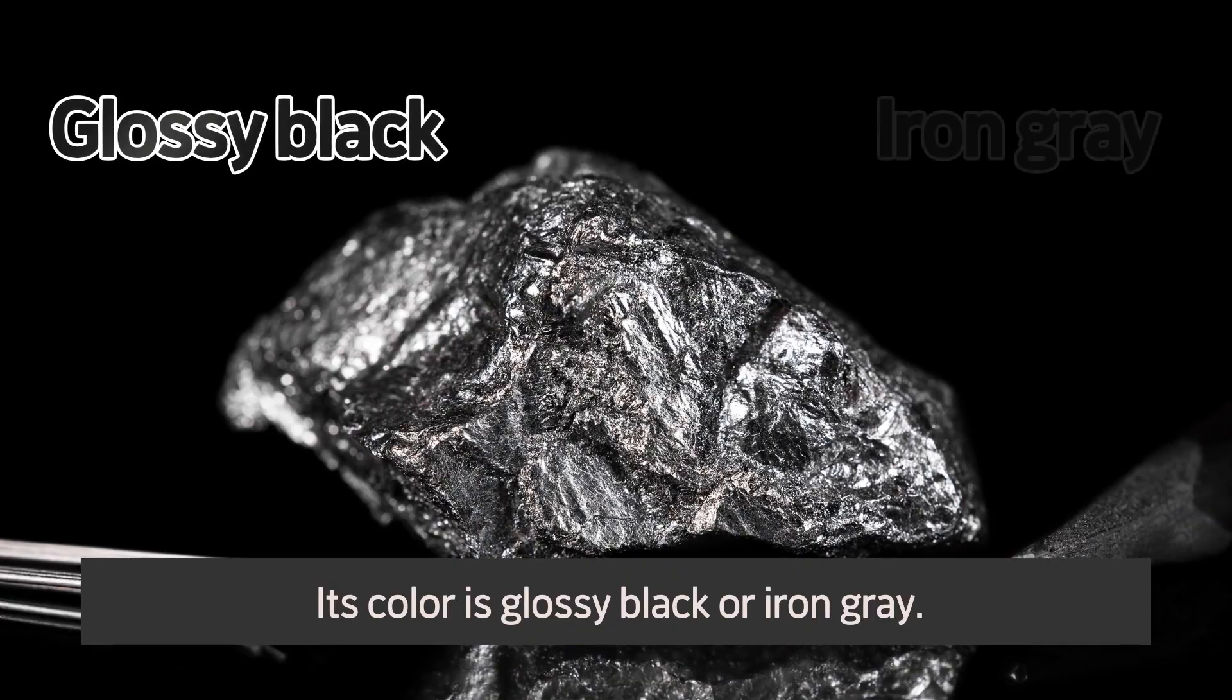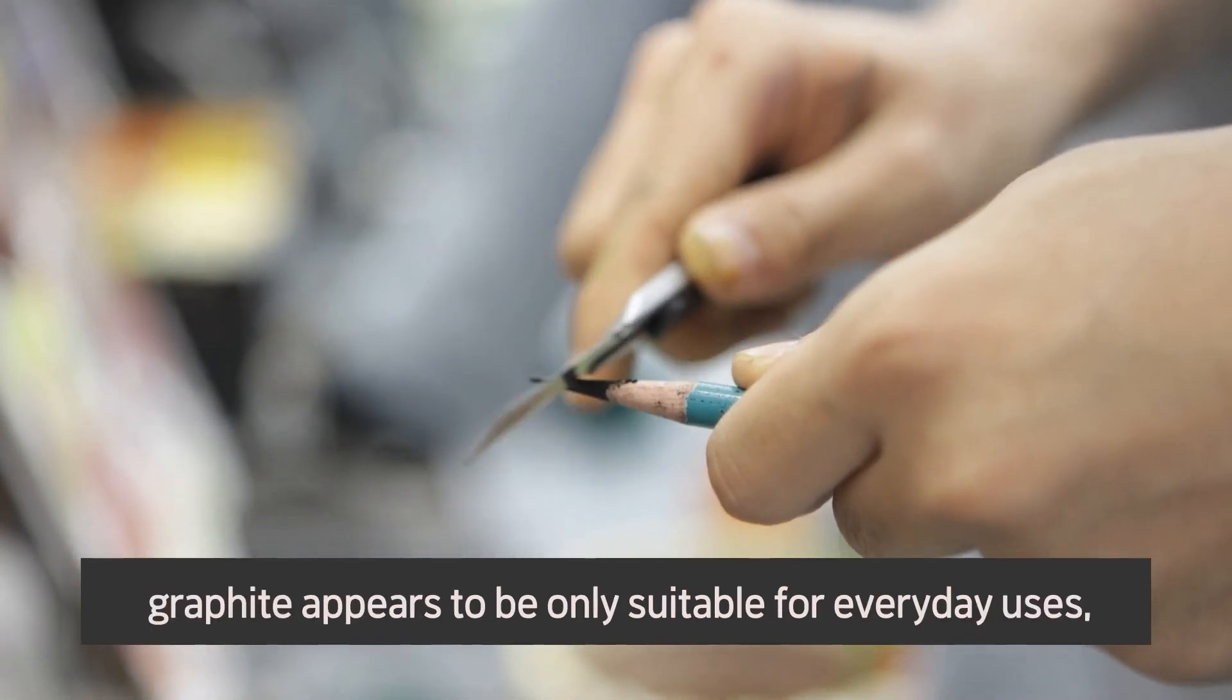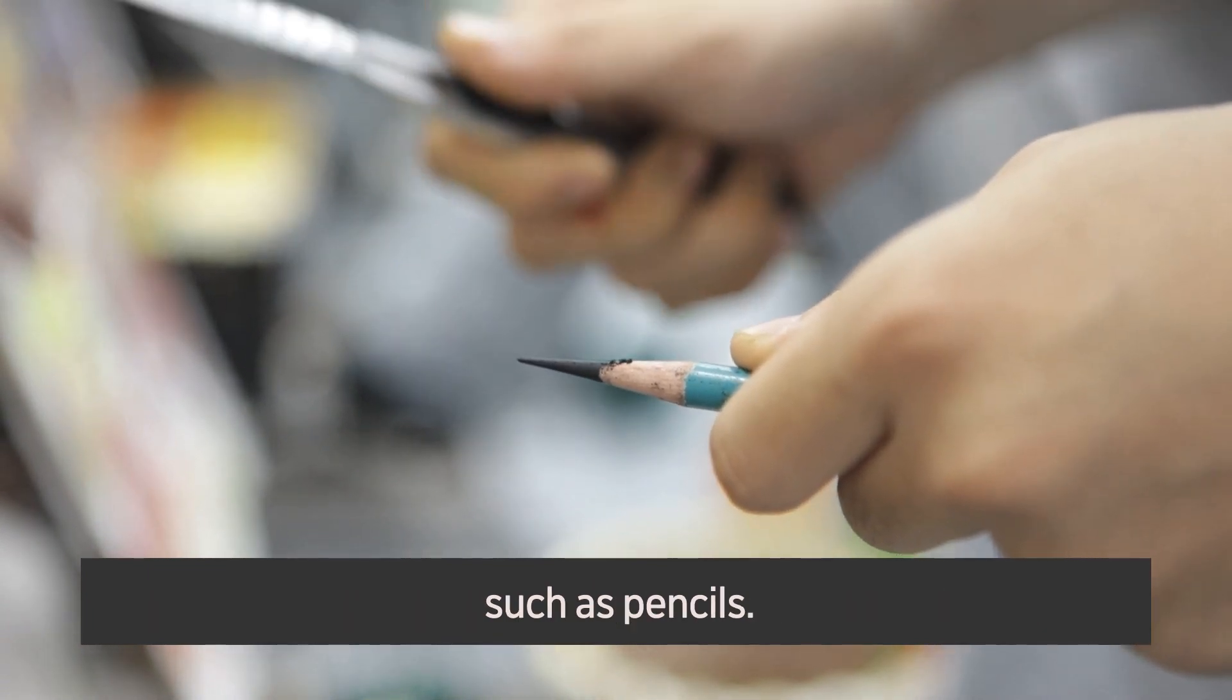Its color is glossy black or iron gray. With its dark color and soft texture, graphite appears to be only suitable for everyday uses, such as pencils.